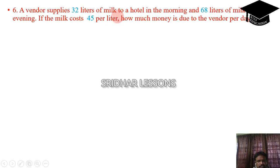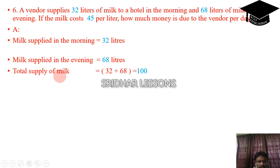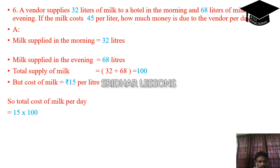A vendor supplies 32 litres of milk in the morning and 68 litres in the evening. If milk costs 45 rupees per litre, how much money is due per day? Milk supplied in the morning is 32 litres and in the evening is 68 litres, so total supply per day is 100 litres (32 plus 68). The total cost is 45 into 100, which is 4500 rupees per day.